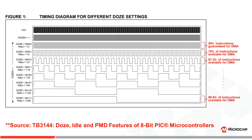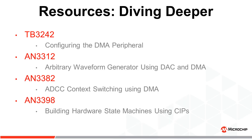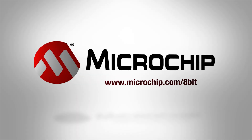Hopefully this video helped shed some light on direct memory access on PIC microcontrollers. If you made it this far, check out the next video where we implement this without writing any lines of code and with zero CPU utilization. I've also left links in the video's description to application notes and tech brief resources that show basic configurations and highlight more interesting use cases utilizing DMA for things like arbitrary waveform generation and state machine automation. Please feel free to like, comment, or subscribe — we here at Microchip love getting as much feedback as possible. Until next time, thanks for watching.